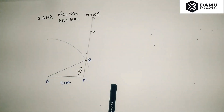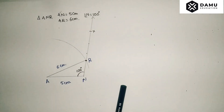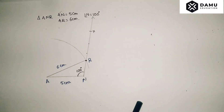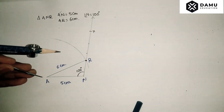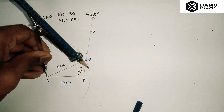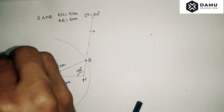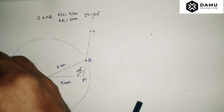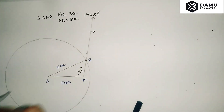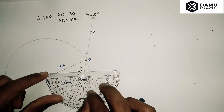Join A to R — that is 6 centimeters. So we have constructed the triangle. Now we have to check whether we get two triangles or not. To do that, draw one full circle with a 6 centimeter radius from A.